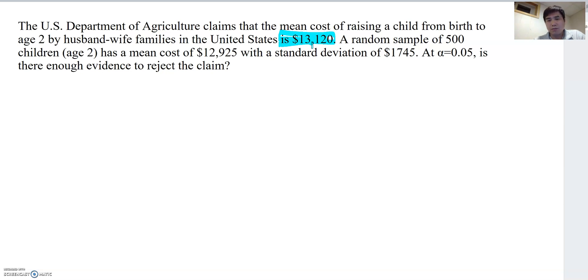And the 'is' means equal. So equal means H0, right? So now we can make H0: μ = $13,120, and then HA: μ ≠ $13,120.